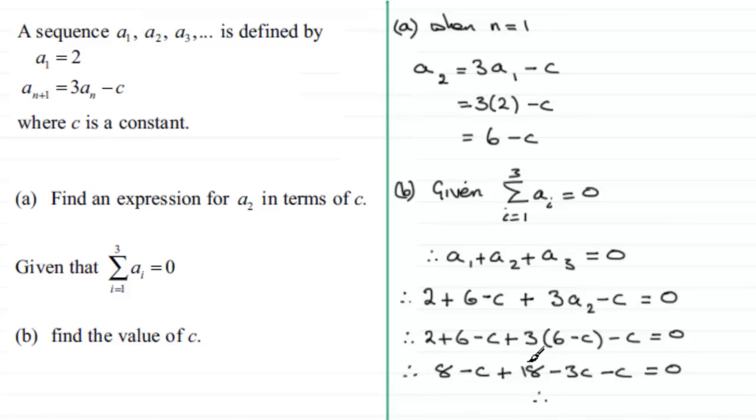8 and 18 is 26, and we have minus c minus 3c minus c which is minus 5c total. So 26 - 5c = 0. Adding 5c to both sides: 26 = 5c. Dividing both sides by 5: c = 26/5, which is 5.2.